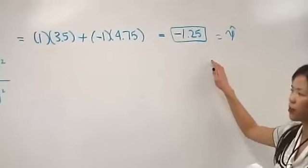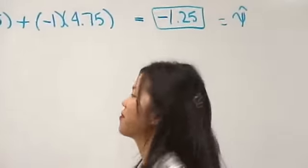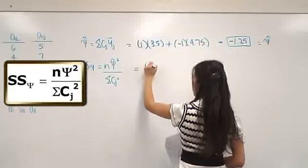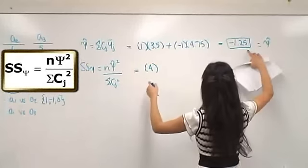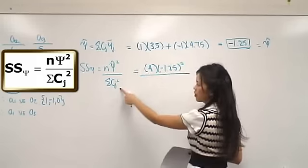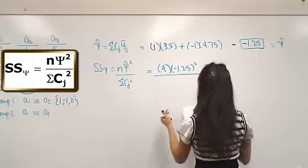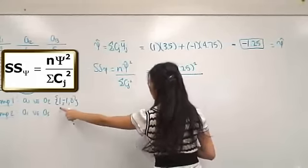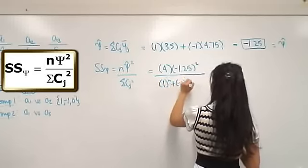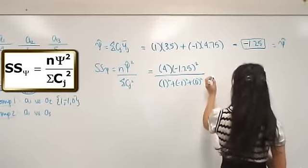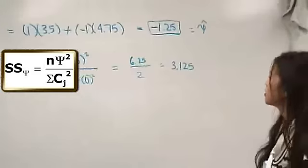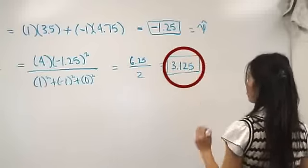So that is just a number that we're going to put into this equation to get our sum squared. So here, N is the number of subjects per group, so I've got 4. Psi is from here, so it's minus 1.25 squared, divided by the sum of all my coefficients squared. So my coefficients, remember, are 1, negative 1, and 0. So I'm going to have 1 squared plus negative 1 squared plus 0 squared. And I'm going to get a number of 3.125. So I have a sum squared for just this comparison of 3.125.